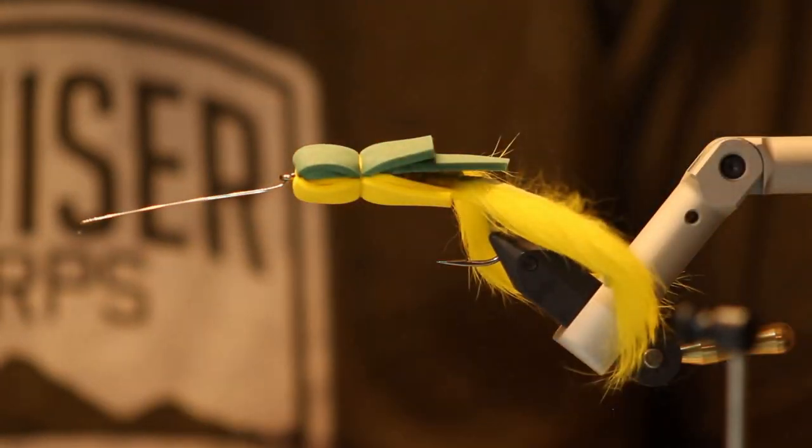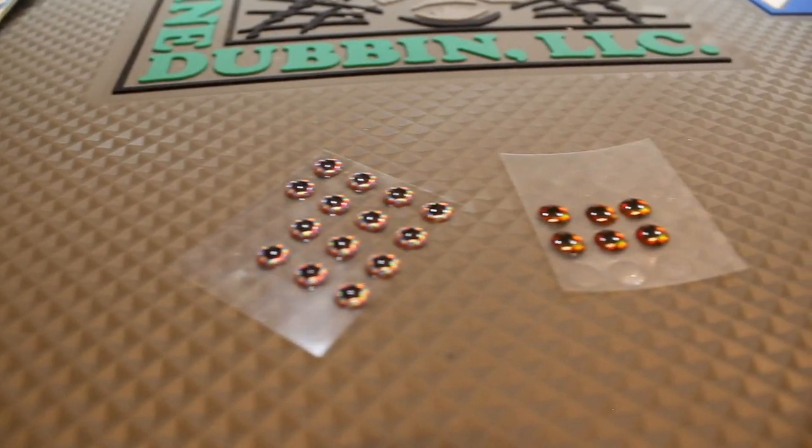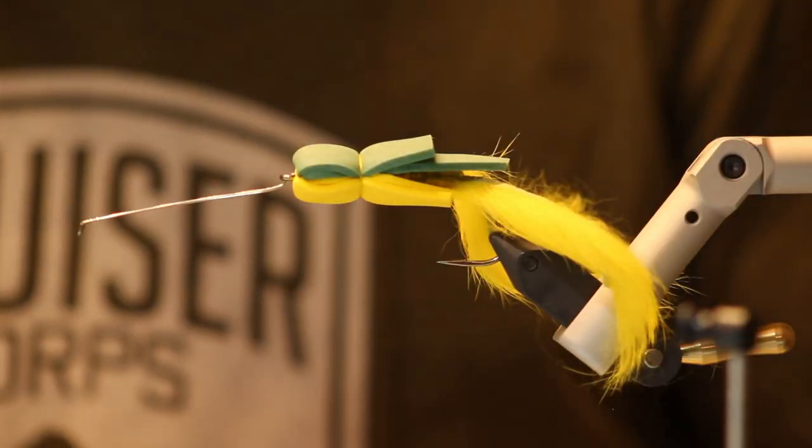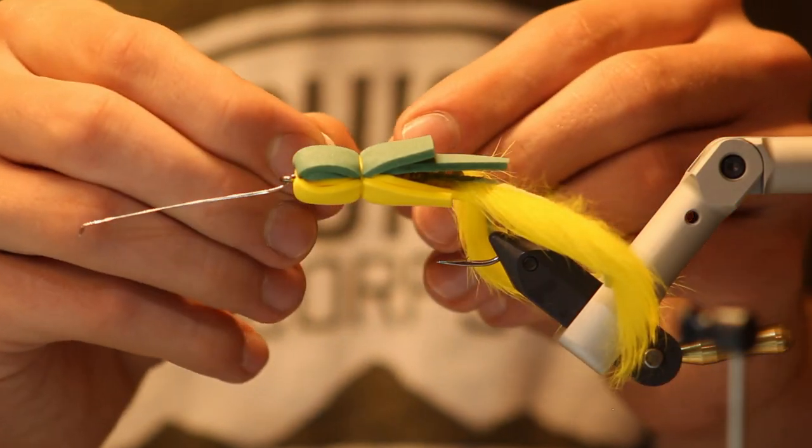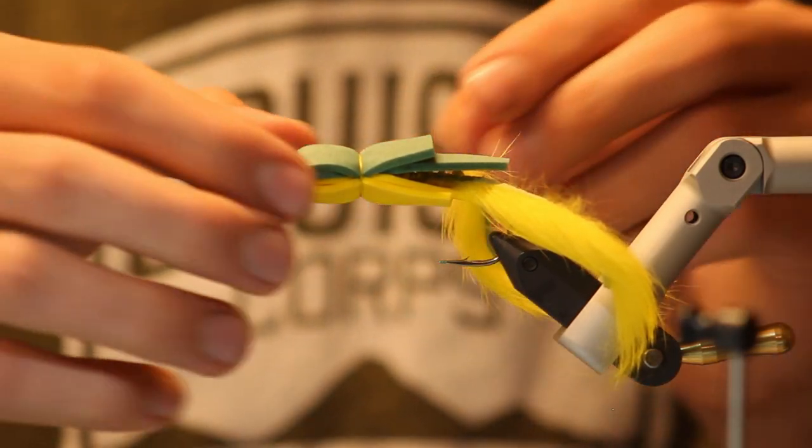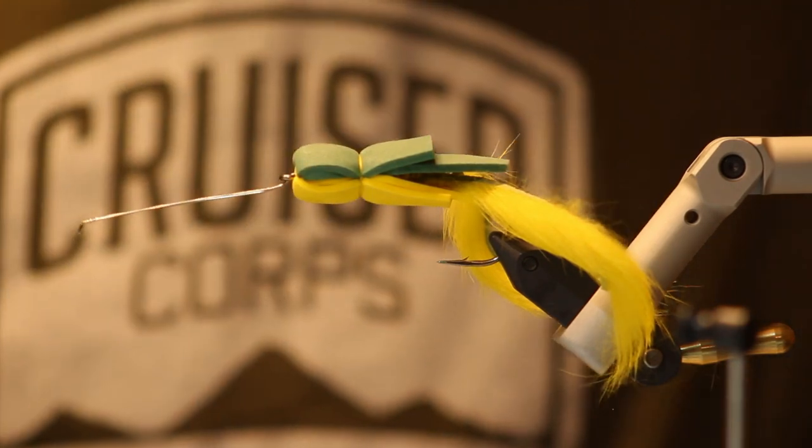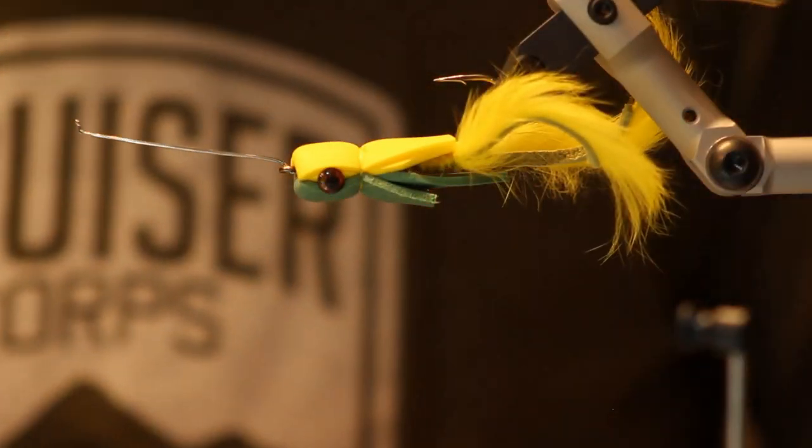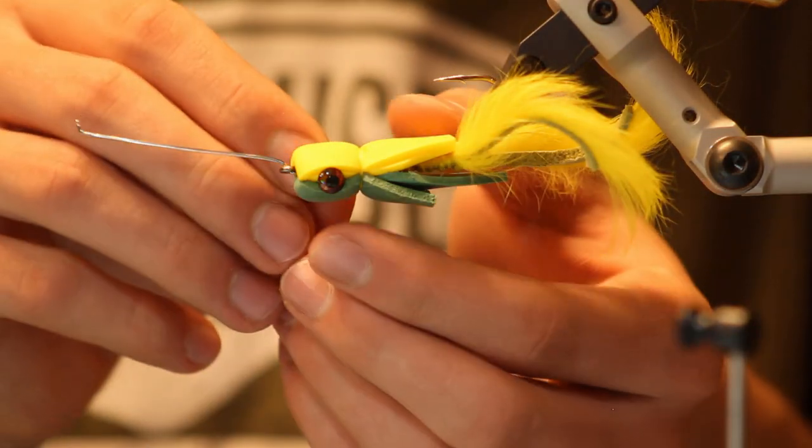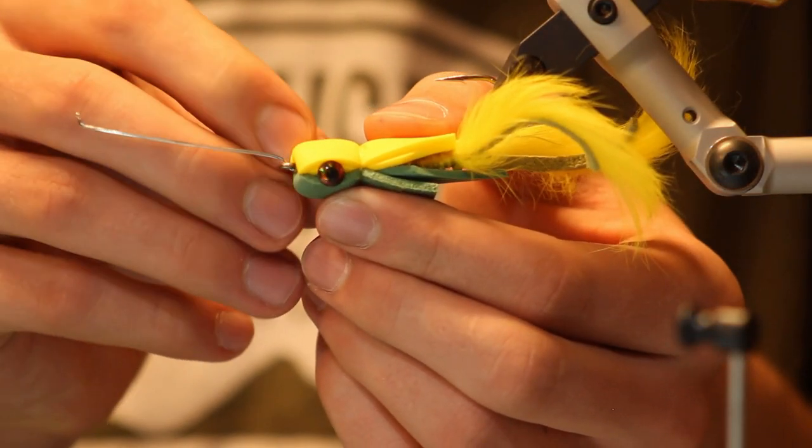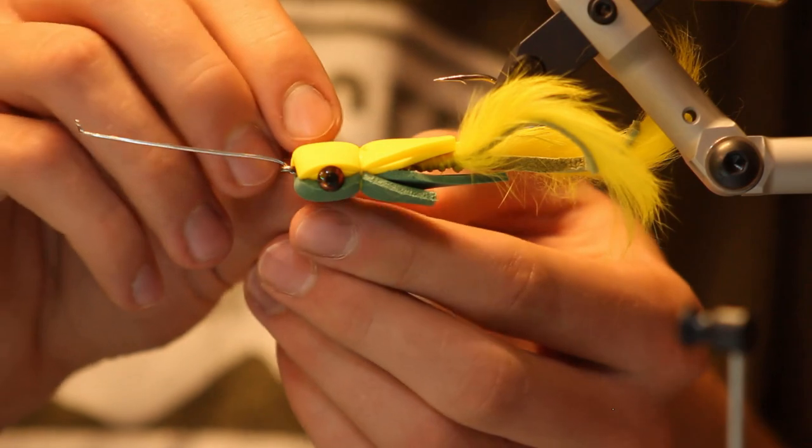Now I got some 6mm 3D eyes. I'm just going to peel these off. Stick them right onto the side of the bait. We'll put little eyes on our frog. Do the same on this side. Trying to get them even.